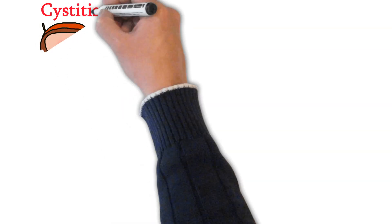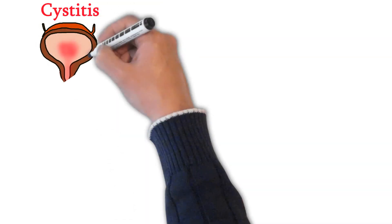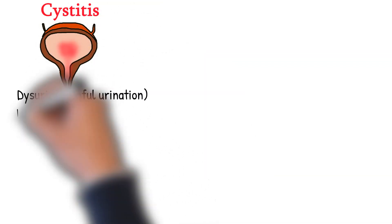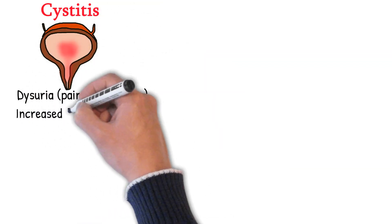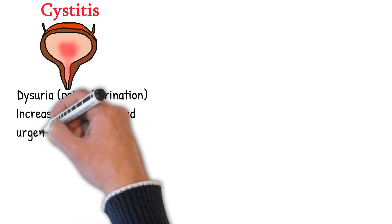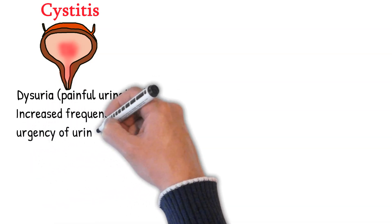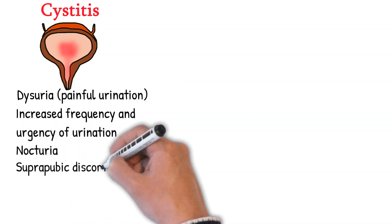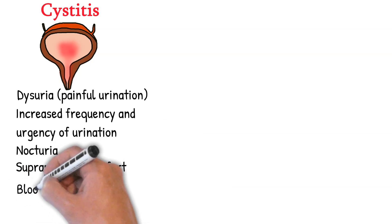Symptoms of cystitis: Dysuria — painful urination — increased frequency and urgency of urination, feeling of having to urinate all the time. Nocturia — increased frequency of urination at night.